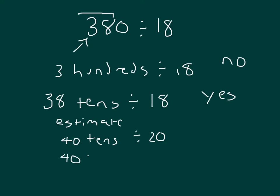That would be 40 tens divided by 10 divided by 2. 40 tens divided by 10 is 4, and that's 4 tens, and divided by 2 is 2 tens.